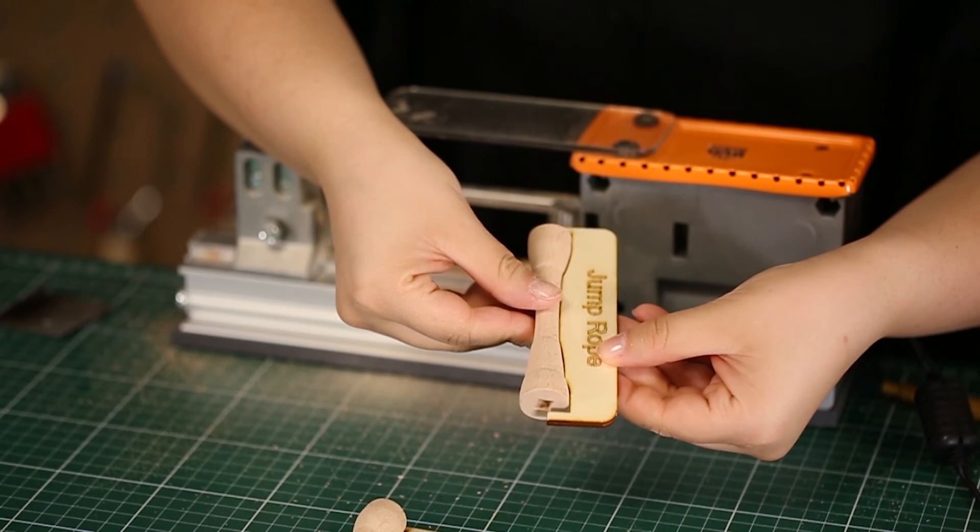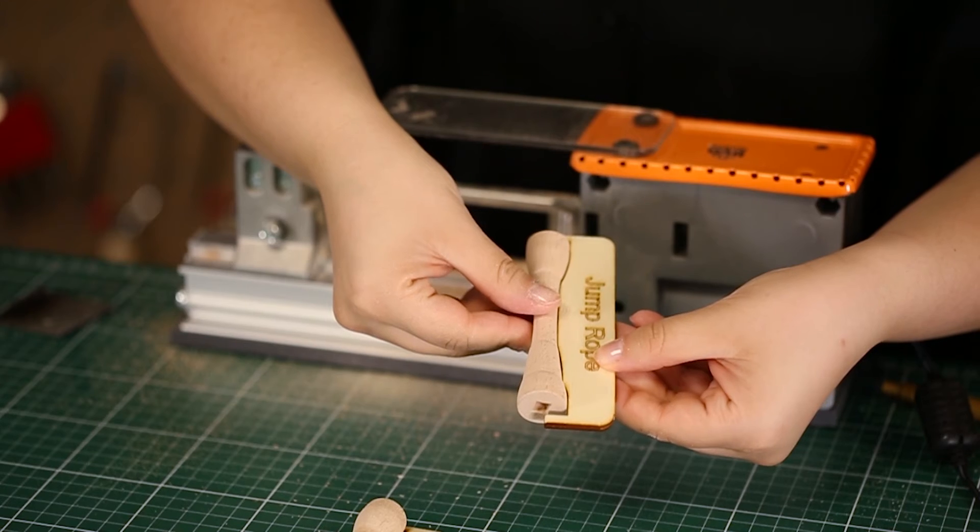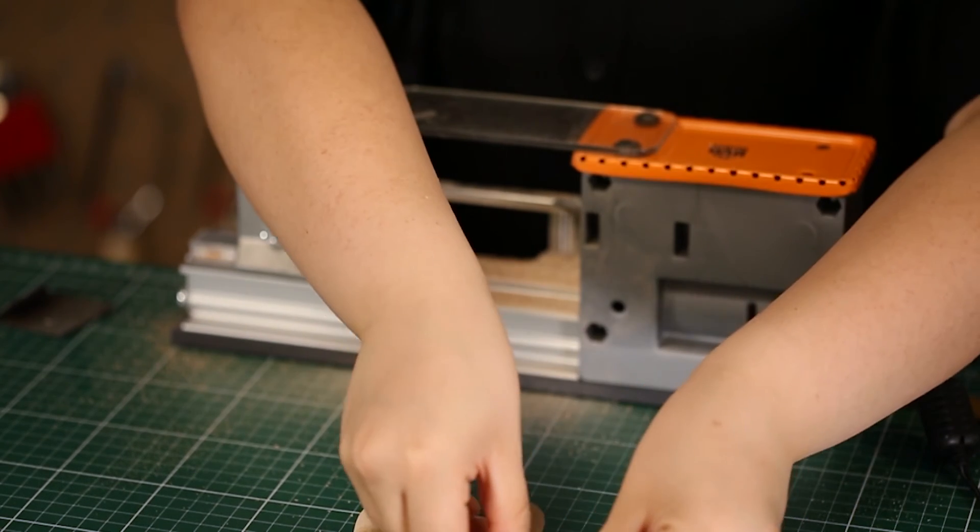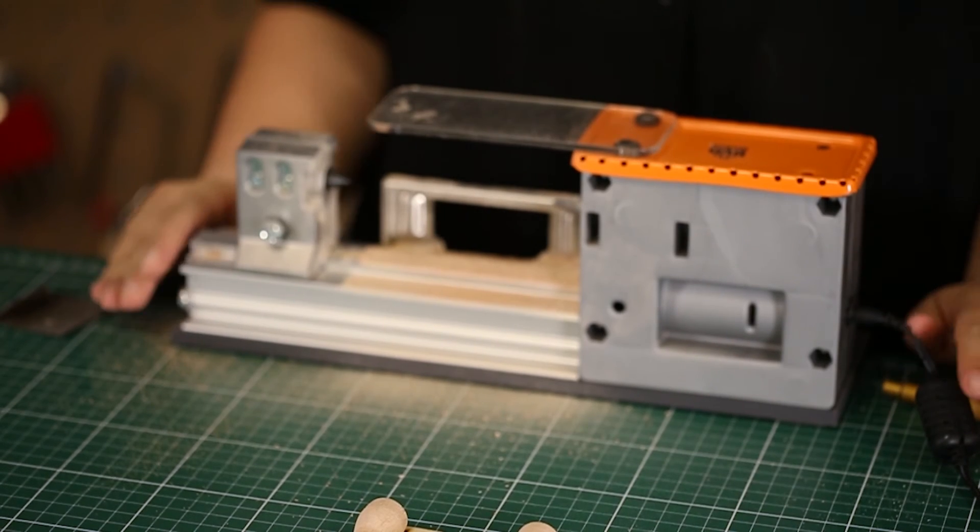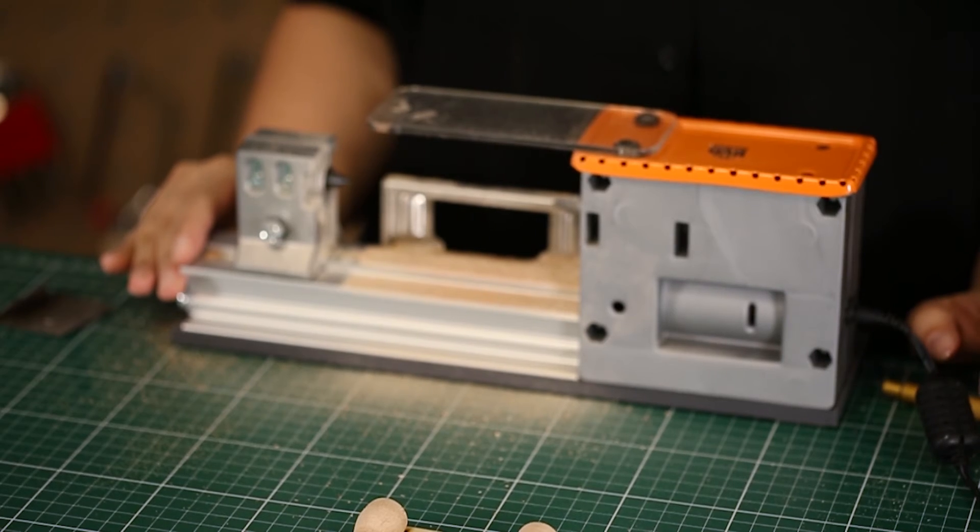Now, we will check it with our guides. As you see, it looks nice. Now, it's time to clean our lathe. To clean our lathe, we will use a vacuum cleaner.